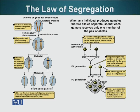This is how we understand it today, but Mendel did not have this information available when he was doing his experiments. He was solely relying on the mathematical model and the statistics he had accumulated. So Mendel's interpretation of this data was the law of segregation: when any individual produces gametes, the two alleles separate so each gamete receives only one member of the pair of alleles.